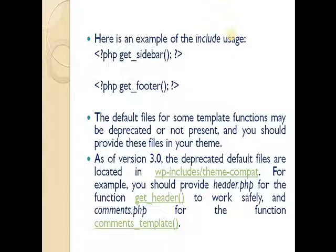The default files for some template functions may be deprecated or not present, and you should provide this file in your theme. As of version 3.0, the deprecated default files are located in wp-includes/theme-compat. For example, you should provide header.php for the function get_header() to work safely, and comments.php for the function comments_template().